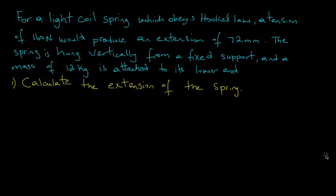The question says: for a light spring which obeys Hooke's law, a tension of 160 newtons would produce an extension of 72 millimeters. The spring is hung vertically from a fixed point and a mass of 12 kilograms is attached to its lower end. The question asks us to calculate the extension of the spring.